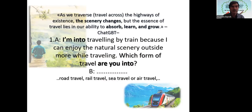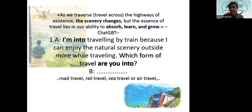Dialogue one — the distinctive word or phrase here is 'to be into.' To be into something means to like something. For example: 'I am into traveling by train because I can enjoy the natural scenery outside.' Which form of travel are you into? I am into traveling by plane, by sea, by rail. 'To be into rail travel' means I like rail travel.